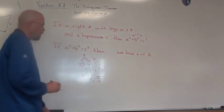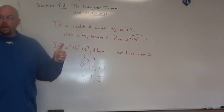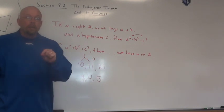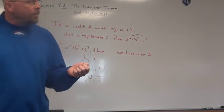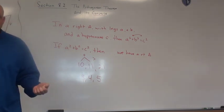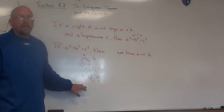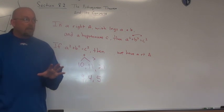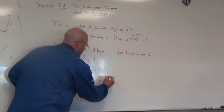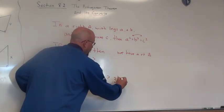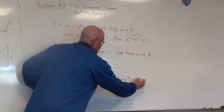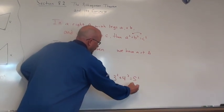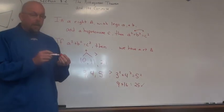Let's try 3, 4, 5. Three plus four is seven, and seven is bigger than five, so it makes a triangle. Now, do those three measurements make a right triangle? The longest side is C, so we check: is three squared plus four squared equal to five squared? Three squared is 9, four squared is 16, five squared is 25. Nine plus sixteen equals 25 — yes, it is a right triangle.